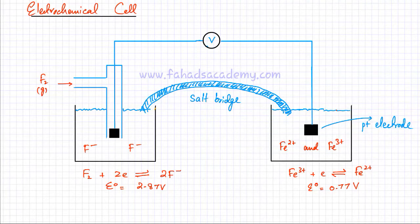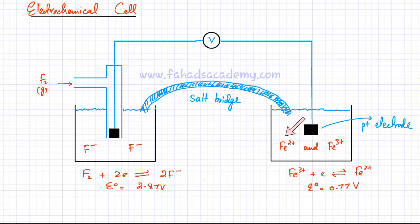In this lecture, I'm going to do another example of an electrochemical cell. I've drawn an electrochemical cell in front of you and I've connected two electrodes together. One electrode has a platinum catalyst placed in a solution containing Fe²⁺ ions and Fe³⁺ ions, so a reversible reaction would be set up at this platinum electrode.